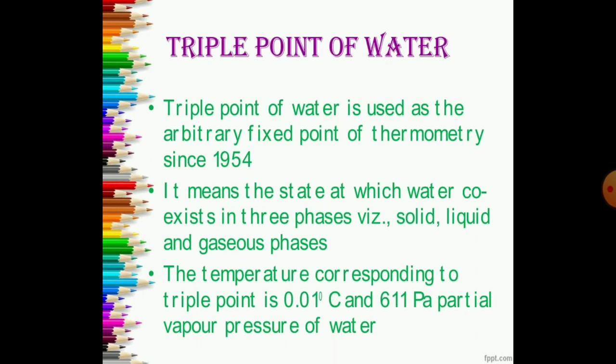The triple point of water is used as the fixed point of thermometry. It means that water coexists in three phases: solid, liquid and gas. The temperature corresponding to the triple point is 0.01 degree Celsius and 611 pascal vapor pressure of water.